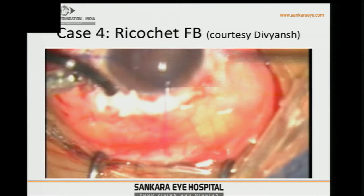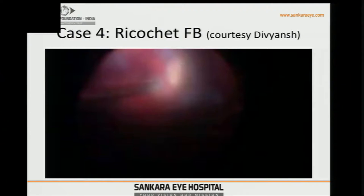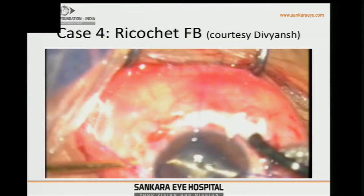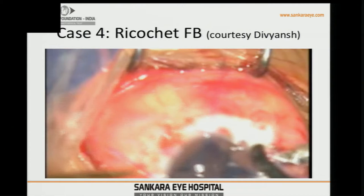A metallic foreign body was retrieved using a handshake technique — a magnet was introduced, pulled up, and then the handshake technique was used to remove it. Since there was a retinal detachment, we did an air-fluid exchange, the PVD was already induced, the clot was dissected, and we performed laser and placed silicone oil.